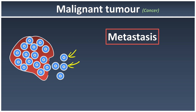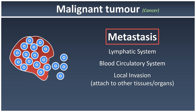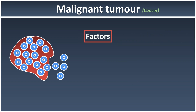We use the specific term metastasis to describe the movement of cancer cells in the body. Most of the time, cancer cells spread through the lymphatic system and the blood circulatory system, or they carry out local invasion by attacking or attaching to nearby organs or tissue. One of the factors causing tumors is the mutation of DNA — when DNA is damaged, it contains incorrect sequences or information about how to divide cells.